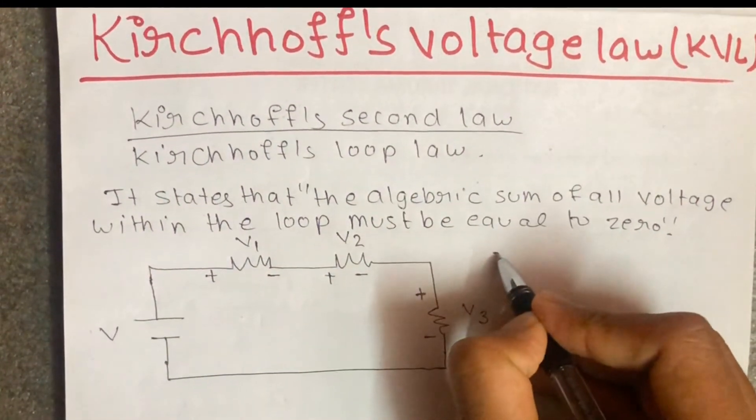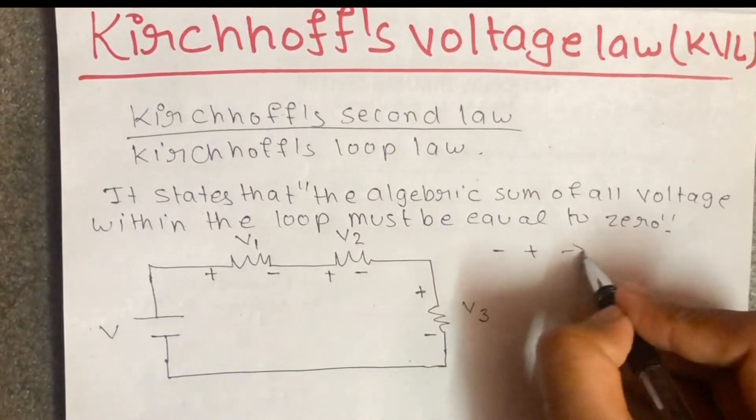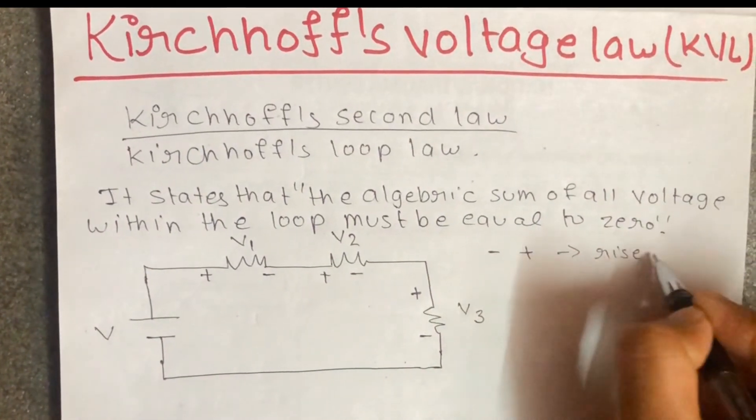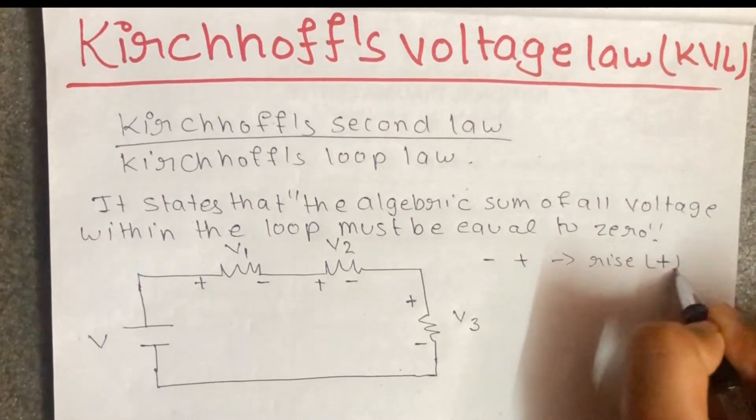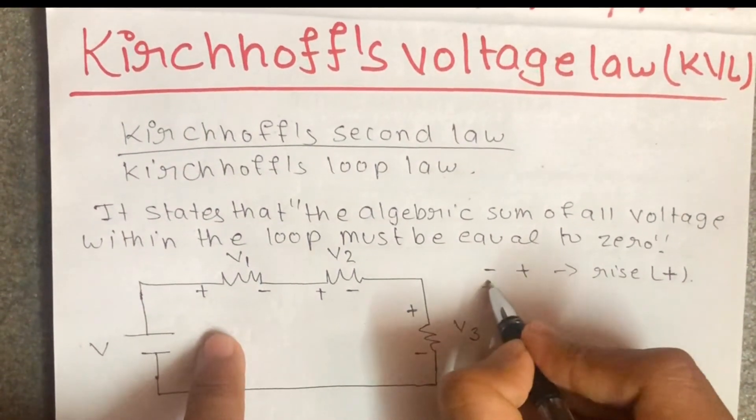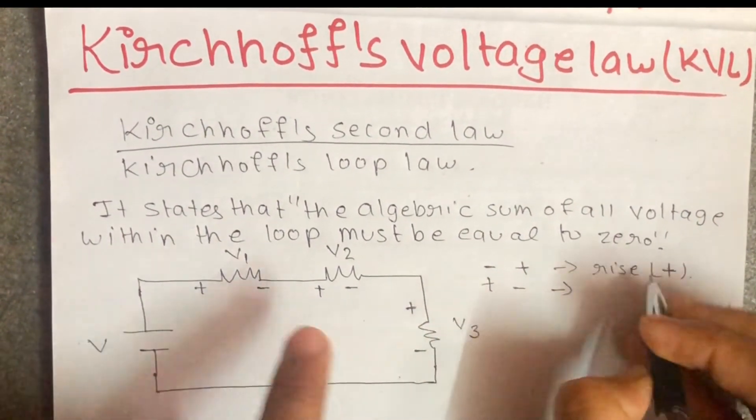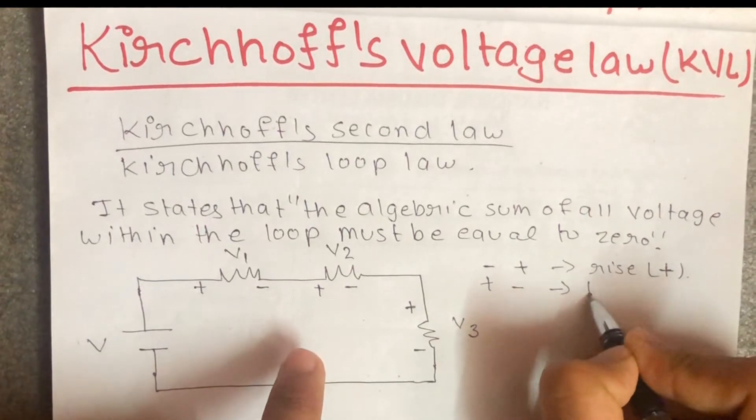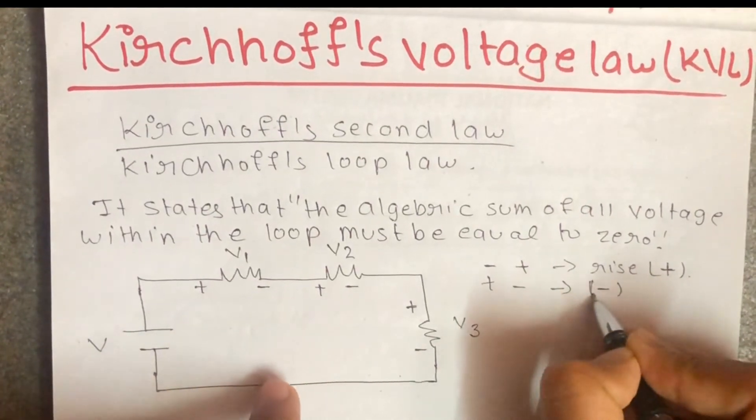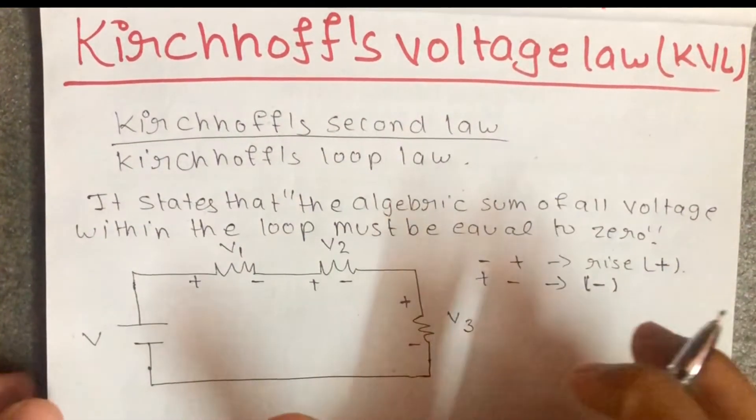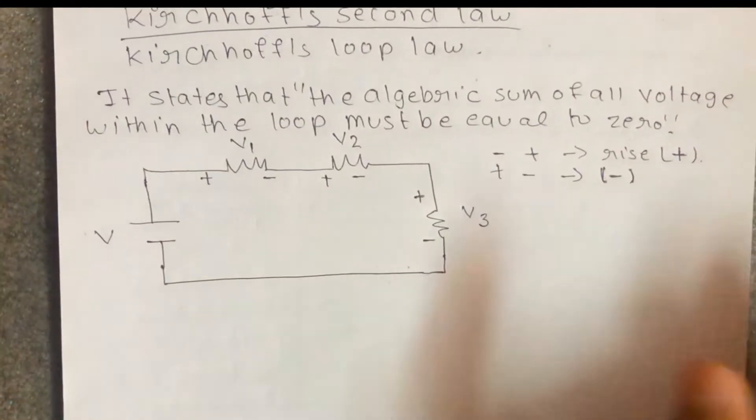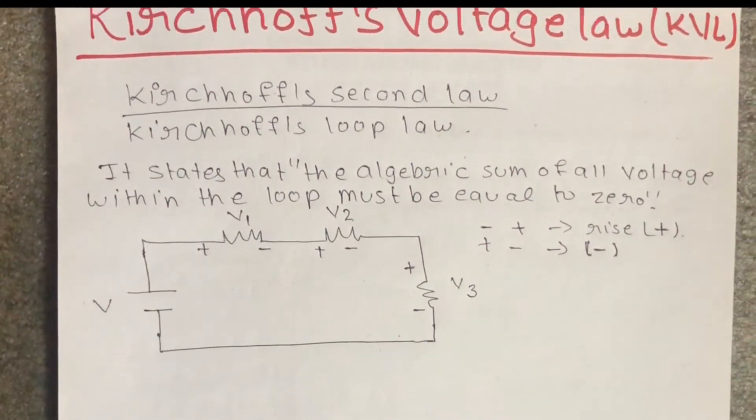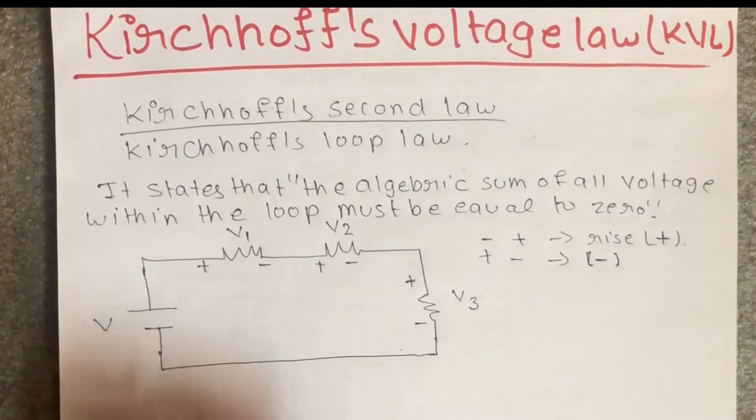Rising voltage, positive to negative terminal where we saw the voltage drop. According to Kirchhoff's voltage law, the algebraic sum of all voltage in the loop must be equal to zero.